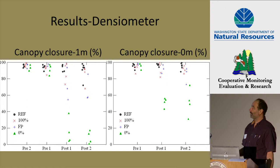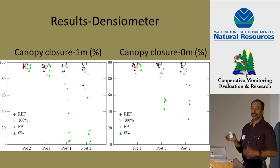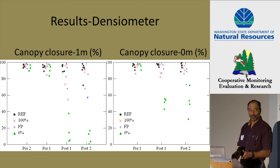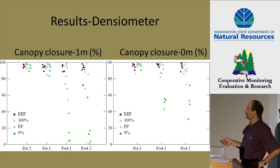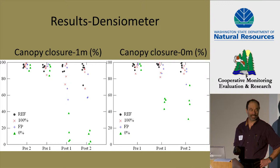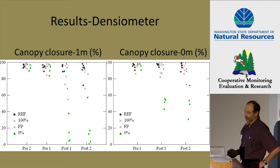For the densiometer results at one meter height, results are very similar to the canopy photos. But at the water's surface — zero meters — you begin to see the effects of slash deposited in the stream along unbuffered reaches. Canopy closure at zero meters is much higher than at one meter, reflecting that slash in the stream. It wasn't everywhere, but there were places with substantial amounts of slash. The Forest Practices sites are a little higher measured at the water's surface than at one meter, and the 100% sites are also higher at the surface.